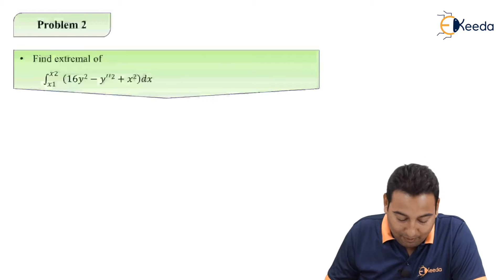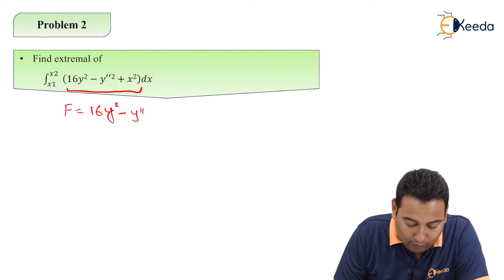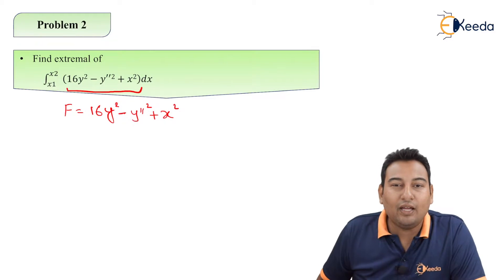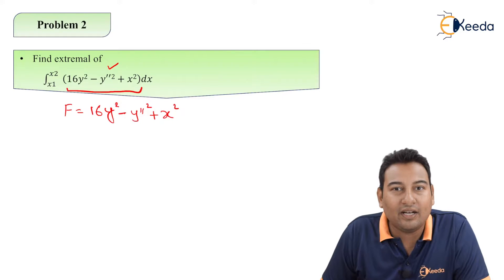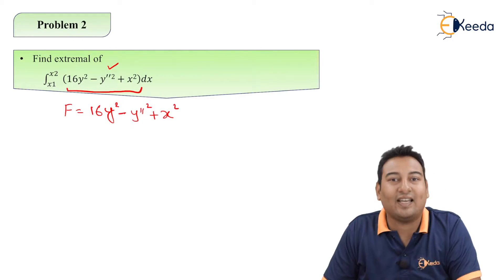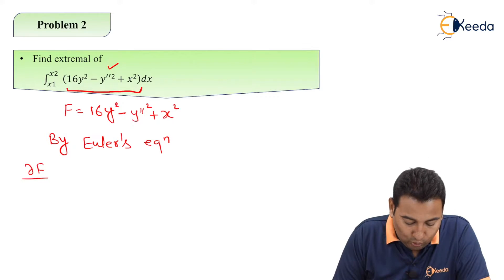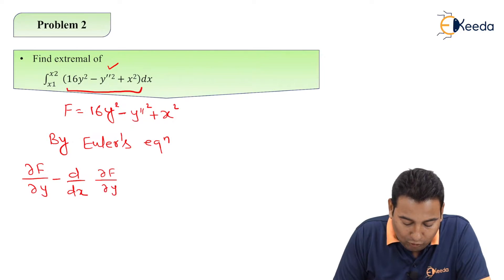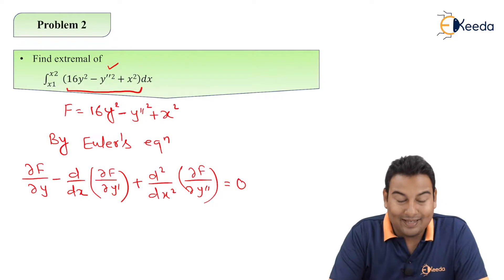Welcome back friends. Let's look at the given problem. We need to find the extremal of the functional f equal to 16y² minus y double-dash squared plus x². If you observe this functional, we have x, y, and y double-dash. Because of this y double-dash, it is type 2. If it were y-dash, it would be type 1.